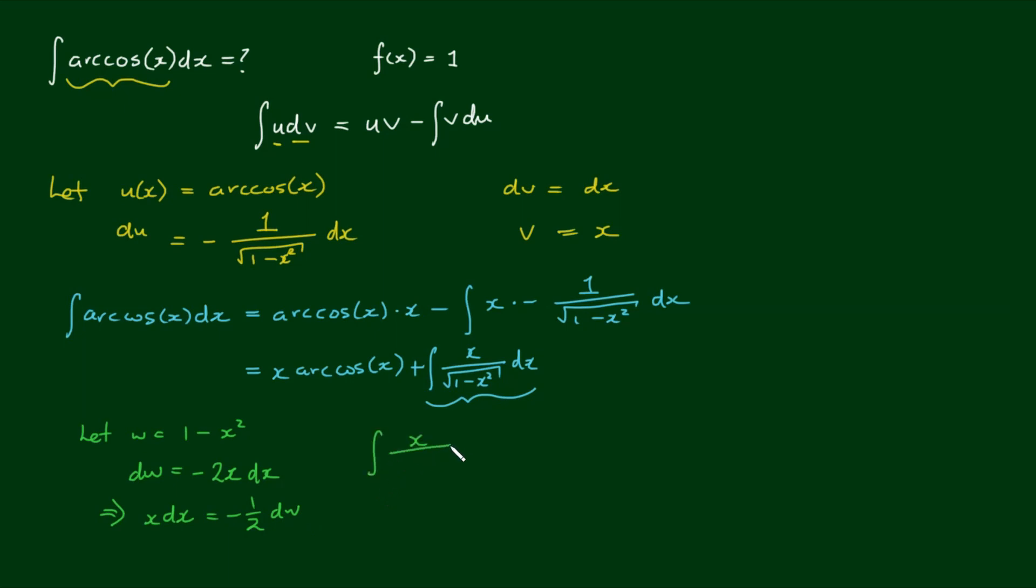So using these as substitutions, the integral of x over the square root of 1 minus x squared dx becomes the integral of negative 1 half dw divided by the square root of w. The negative 1 half can come out the front, so we have the integral of dw over the square root of w, which equals negative 1 half of w to the power of negative 1 half dw.